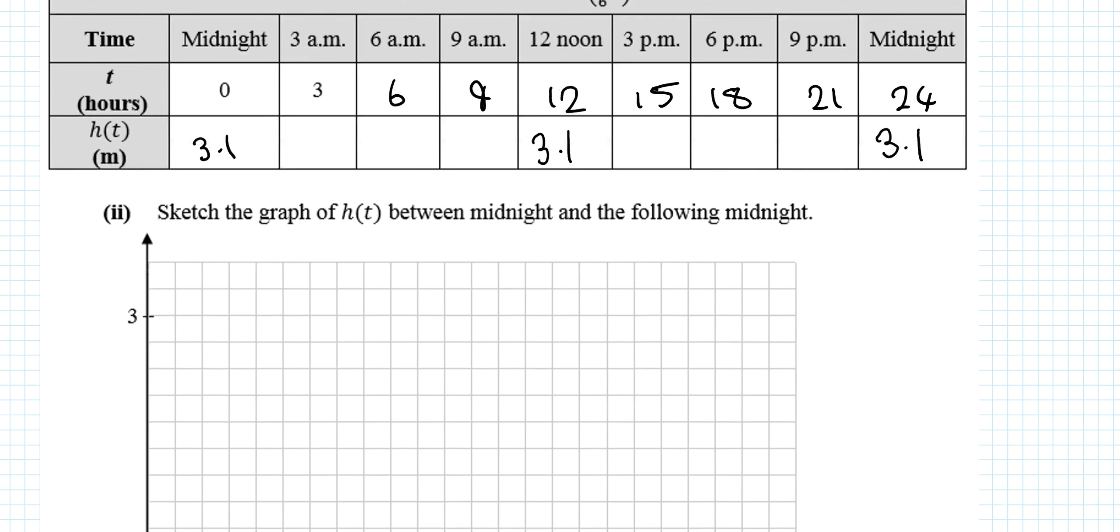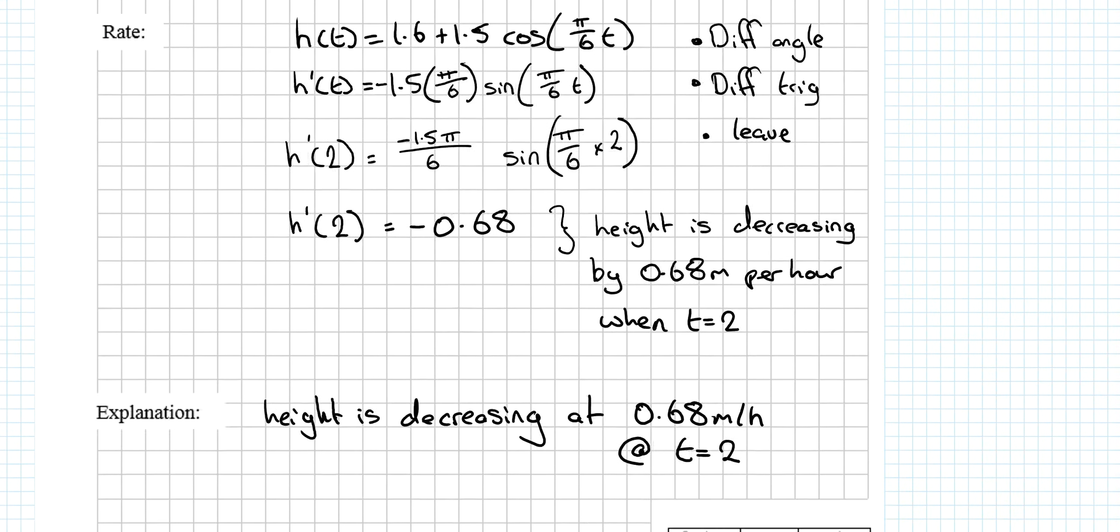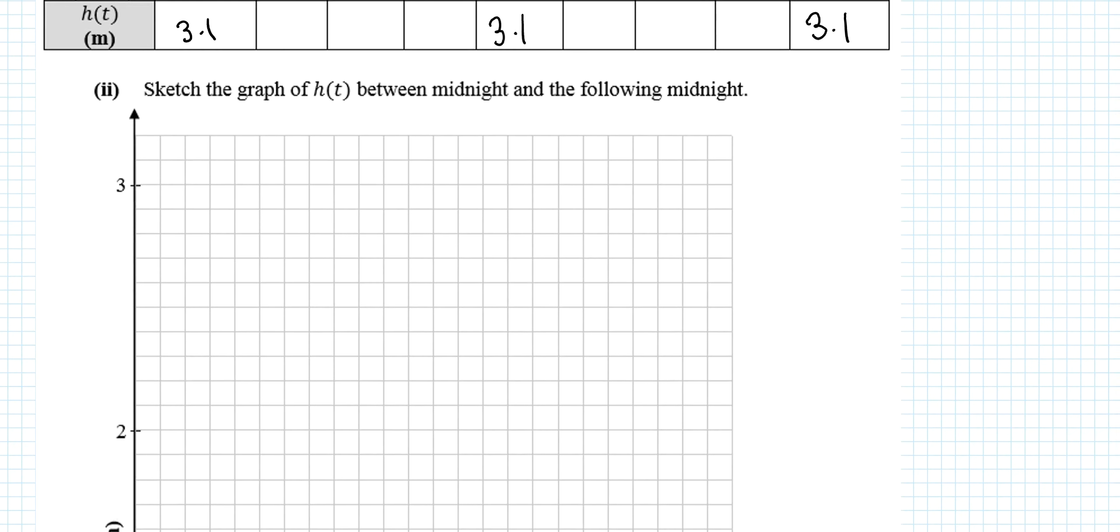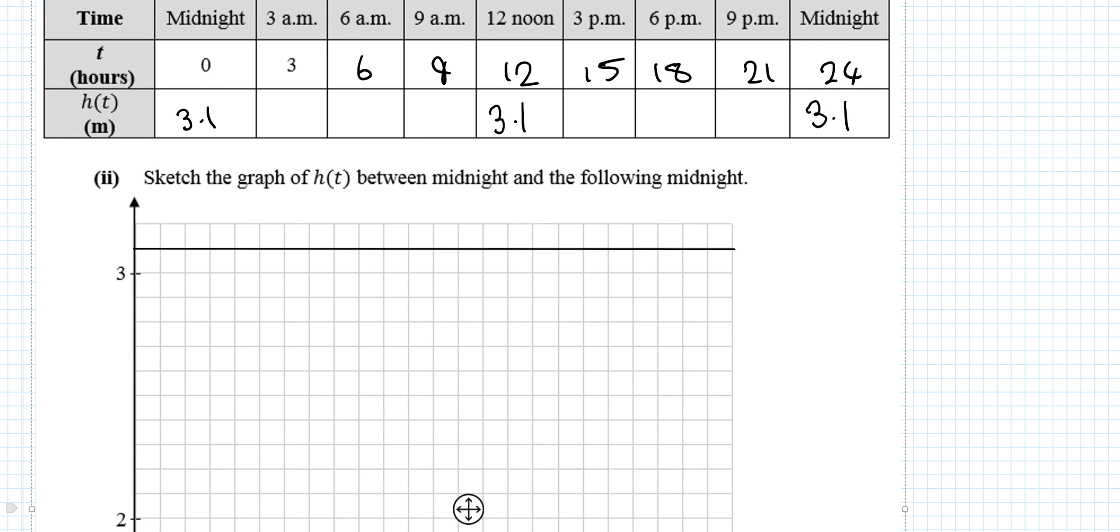In context, what it's going to look like on the graph: We know 3.1 across here - it'll never go above this line. When will it be at its lowest point? It'll be at its lowest point halfway between high tide and the next high tide, so halfway between 0 and 12. So it'll be at 0.1 at hour 6, and again 0.1 at hour 18.